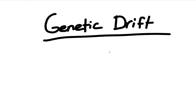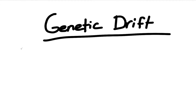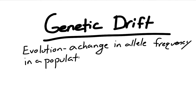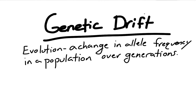In this video we're going to go over genetic drift. Genetic drift can be kind of complicated at first, but hopefully this video will help explain what genetic drift is and how it could result in evolution. Before we can get into genetic drift we do have to define what evolution is. The definition that we use is that evolution is a change in allele frequency over generations.